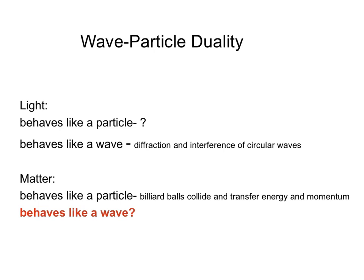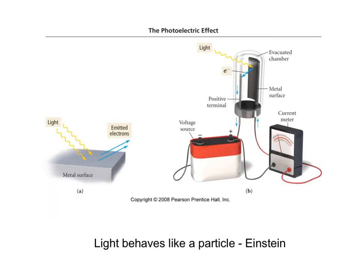Light can behave like a particle and a wave. Now we want to look at light behaving like a particle — is that possible? The next slide shows Einstein's experiment around 1905, for which he won the Nobel Prize. This is called the photoelectric effect. You take a piece of metal, polish it smooth and shiny, then shine light on it at an angle.